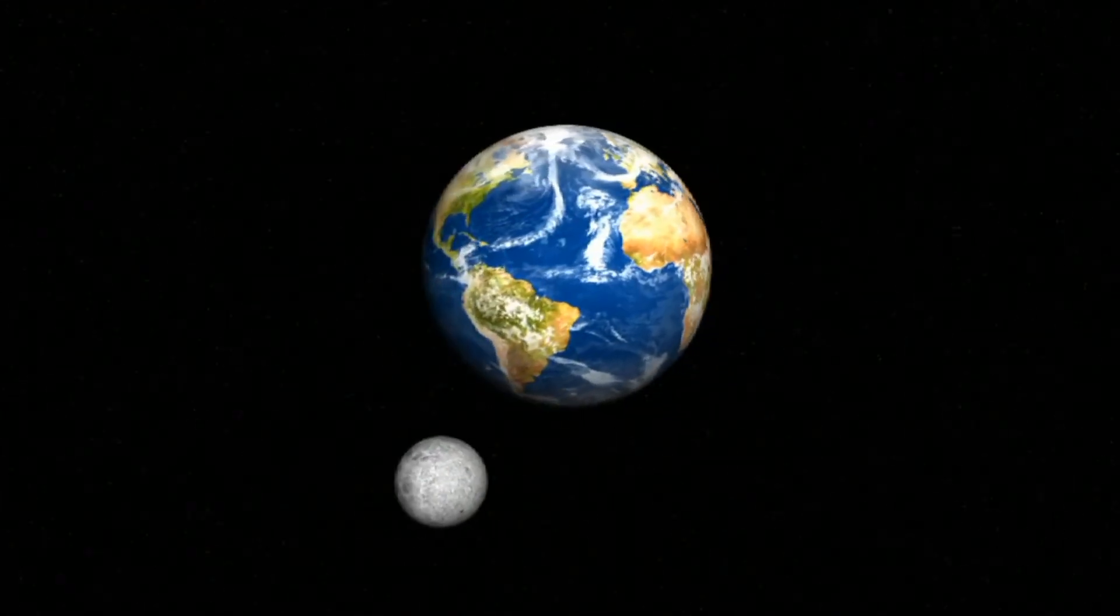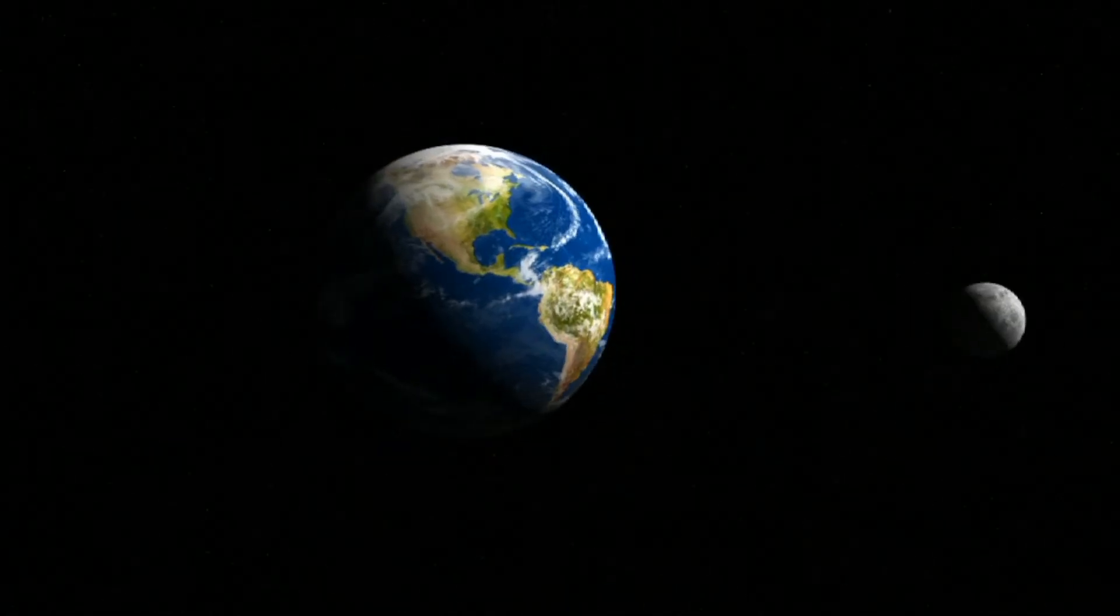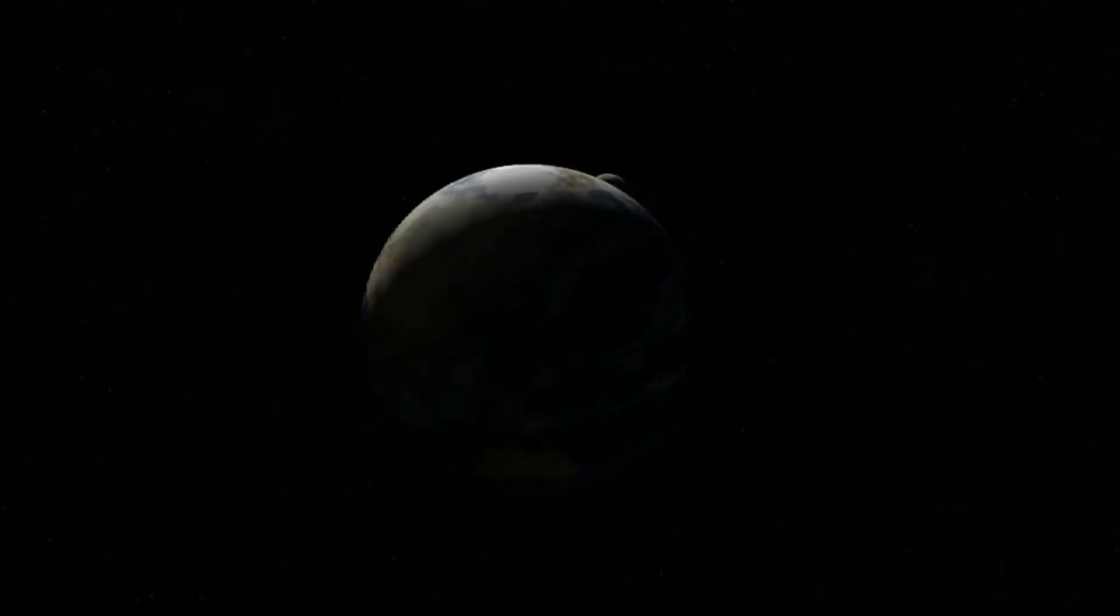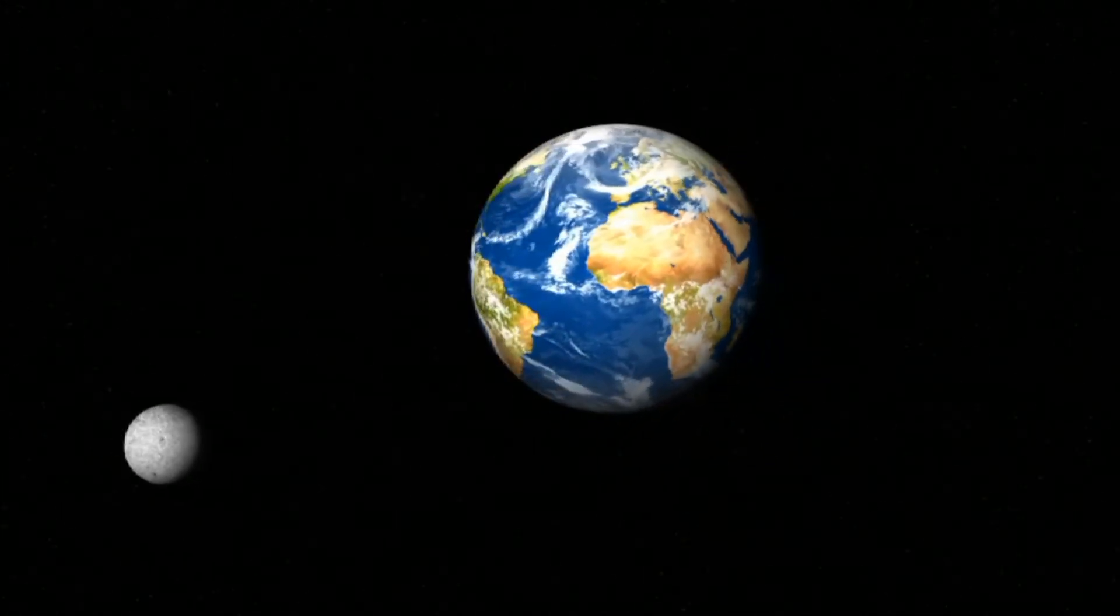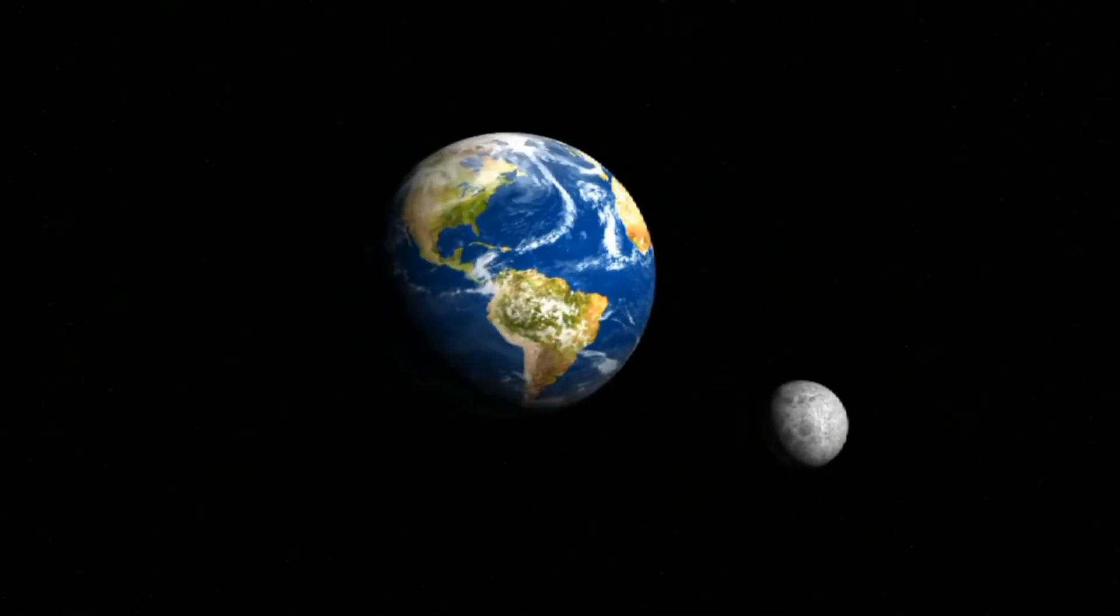The phases of the Moon are produced by the Moon's orbit around the Earth. There are 8 phases of the Moon caused by the Moon's orbit around the Earth and its position in relation to the Sun.